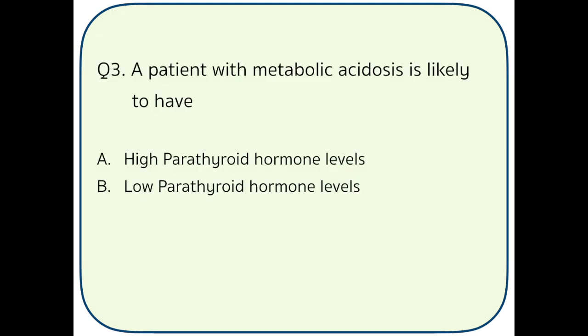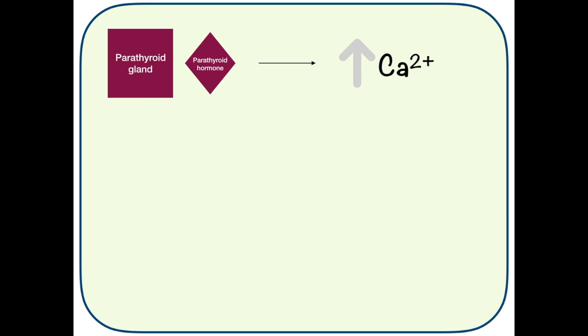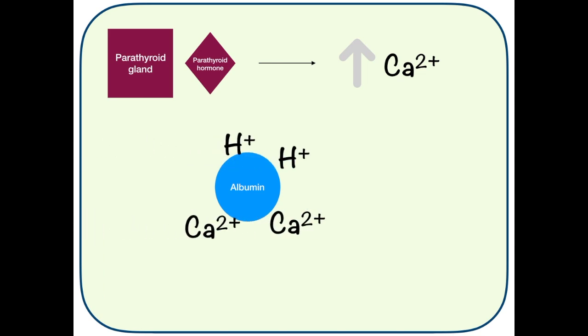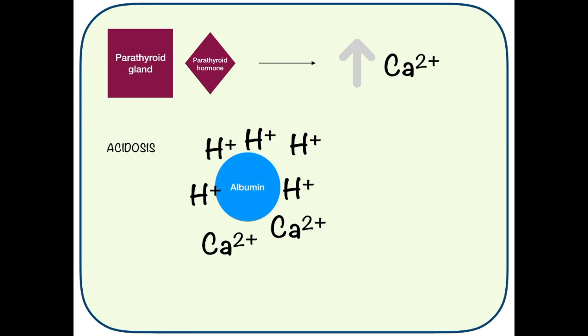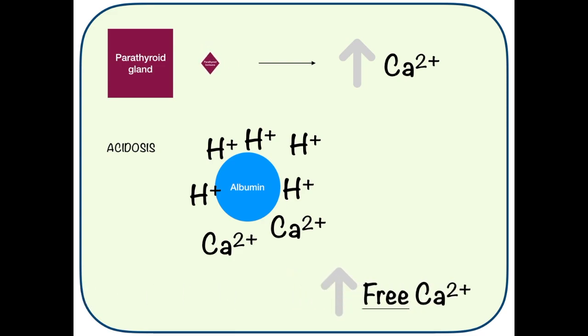Question 3: A patient with metabolic acidosis is likely to have option A high parathyroid hormone, or option B low parathyroid hormone? The answer is low parathyroid hormone. Parathyroid hormone is secreted by the parathyroid gland to increase calcium in the serum. Albumin is a protein, and hydrogen ions and calcium ions compete with each other to bind to albumin. When there is metabolic acidosis, there are many hydrogen ions, so they bind to albumin and calcium ions are left free. Since free calcium is already high, parathyroid hormone secretion will be low.